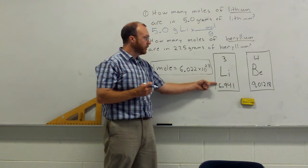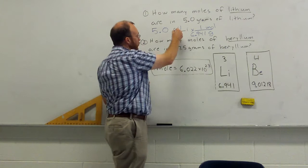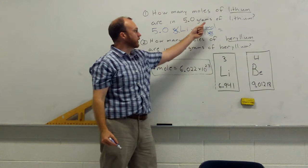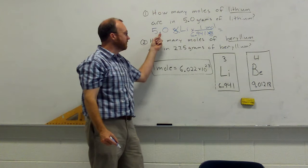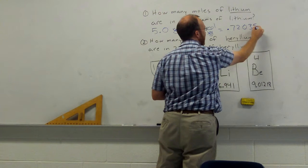So, we know here that we have 6.941 grams per mole. Grams cancels. So, when we do this unit conversion, we're going to end up with moles of lithium, which is exactly what we want. So, we take 5, we divide it by 6.941, and without rounding, we get 0.7203573 moles.